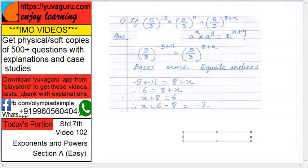So left hand side will become what? 5 upon 3 to the power of minus 5 plus 11, right? And right hand side as it is, 8 plus x. So bases are same, so we can equate the indices. So minus 5 plus 11 equals 8 plus x.